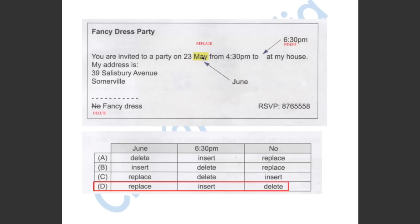As you can see, to change May to June, you have to use the replace option. And to insert in the 630, you have to use the insert option. Also, to take out the 'no', you have to delete it.